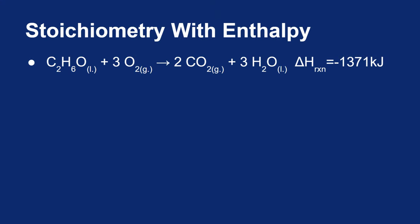Let's take a look at another stoichiometry problem involving enthalpy. We're going to use the same reaction as before. One mole of ethanol will combine with three moles of oxygen to make two moles of carbon dioxide and three moles of water, and the change in enthalpy of this reaction is negative 1371 kilojoules.